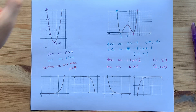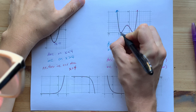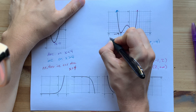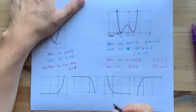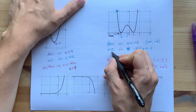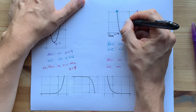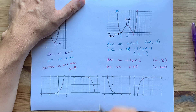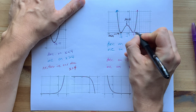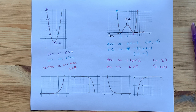Just want to point out: whenever you flip from decreasing to increasing, you end up with a minimum point, because you're going down then up. When you flip from increasing to decreasing, you end up with a maximum. Decreasing to increasing again is another minimum. That'll probably come up later in your course.